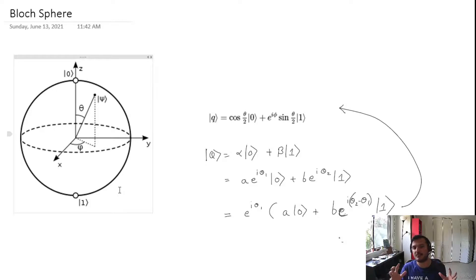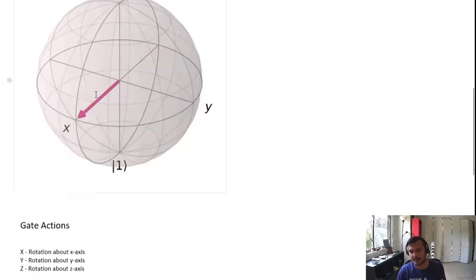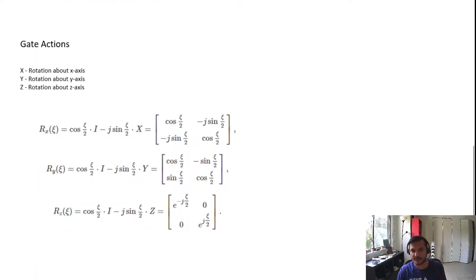The action of gates is basically rotating the qubit point around the sphere. I'll come to this diagram at the end, but I just want to first bring this up. The X gate is basically a rotation about the x-axis, the Y gate is a rotation about the y-axis, and the Z gate is a rotation around the z-axis.